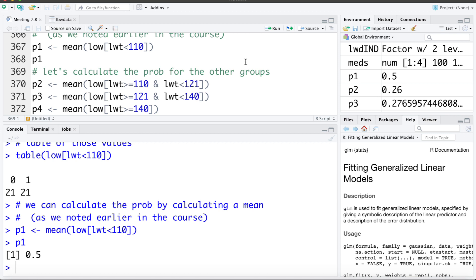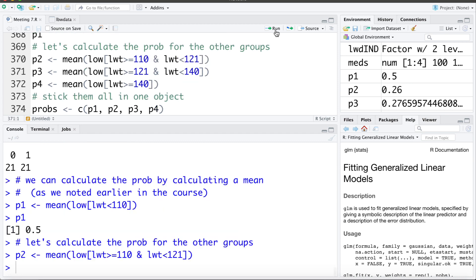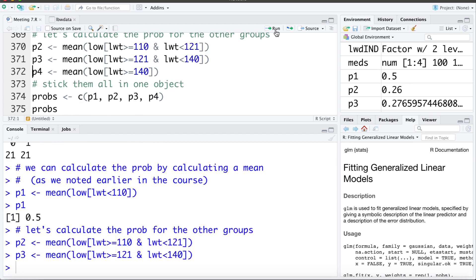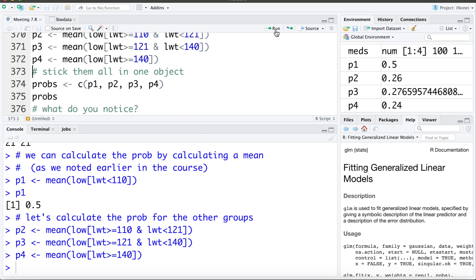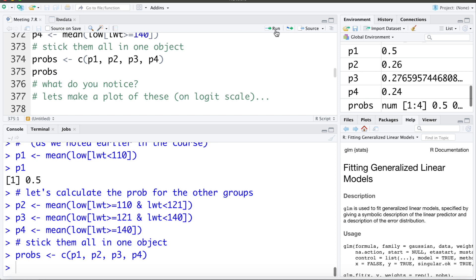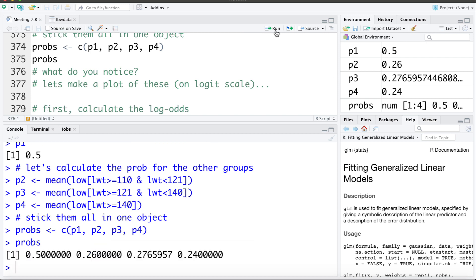The second group we're going to look at what proportion were low birth weight for those whose weights were above 110 but below 121. Let's do the same for group three and for group four, those whose weights are above 140. Now I'm going to stick them all in one object I'm going to call probs. We can look at that here. So we can see in the first group 50 percent were low birth weight, and these were the lowest quarter of mother's weight at menstruation. Now one thing you can notice right away is that once we get into the three upper groups P2, P3, and P4, they're all hovering around 25 percent.